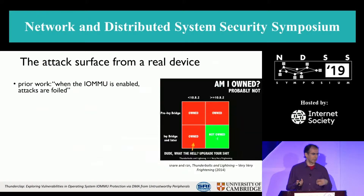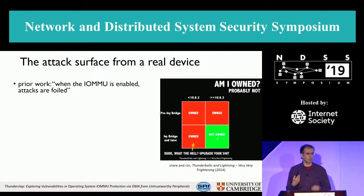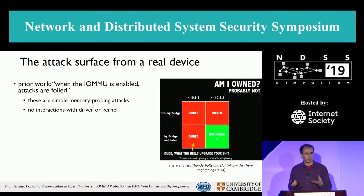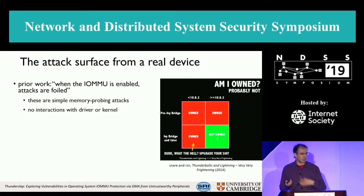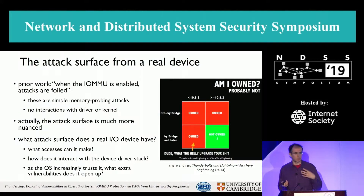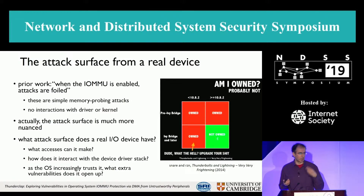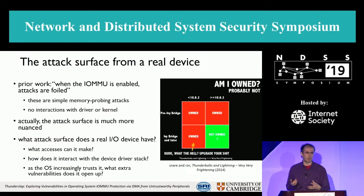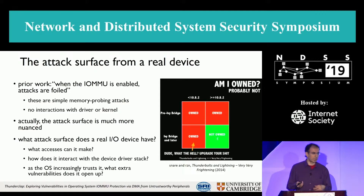What's the attack surface? Previous work has said that when the IOMMU is enabled, all attacks are foiled — nice green box. But those are simple memory probing attacks where you just go and read what memory you can. You don't interact with the device driver or the kernel. Actually, the attack surface is much more nuanced. A device interacts with the device driver and the kernel; the OS starts to trust it and opens up memory windows to allow the device to access.